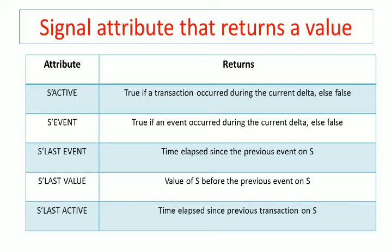For signal attributes that return a value: s'last_event returns the time elapsed since the previous event occurred on the given input signal. Similarly, s'last_value returns the value of s before the previous event of s. Next, s'last_active returns the time elapsed since the previous transaction on s — if there is a transaction where the value is not going to be changed, that value will be returned. These include active, event, last_event, last_value, and last_active.